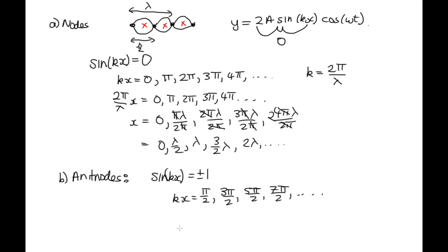And then again, k is equal to 2π over λ. So we've got 2π over λ times x is equal to π over 2, 3π over 2, 5π over 2, 7π over 2.